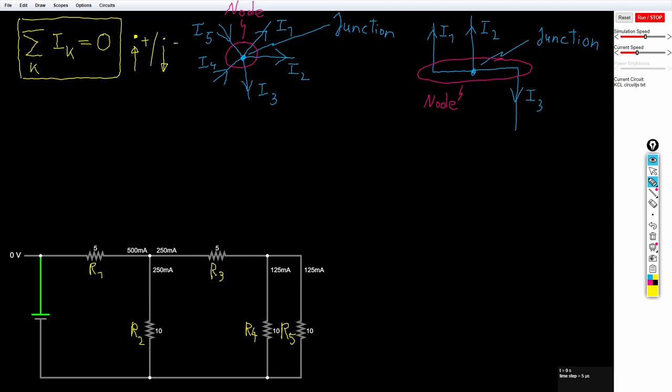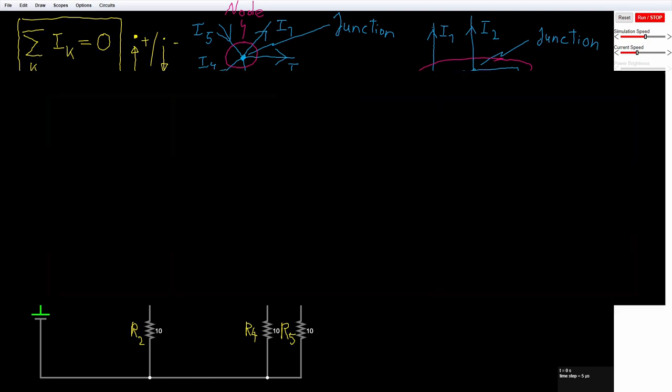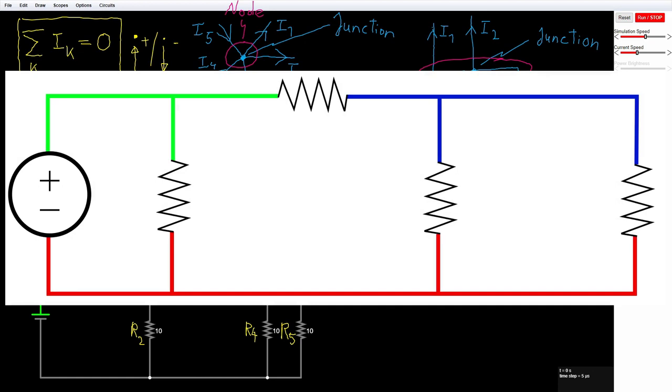A node in a circuit is a region between circuit elements. On screen you can see a picture of a circuit with three different nodes: green, blue, and red. Each node is the area between the connected elements.